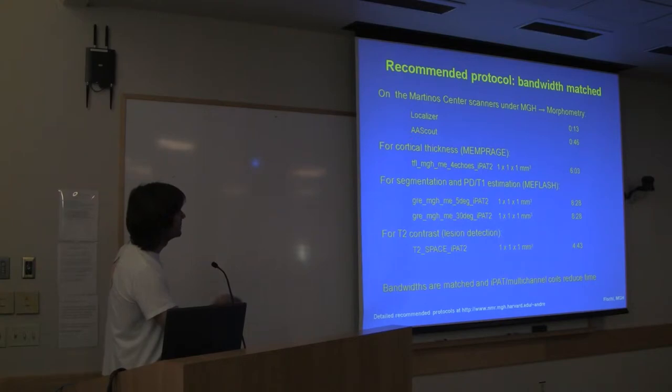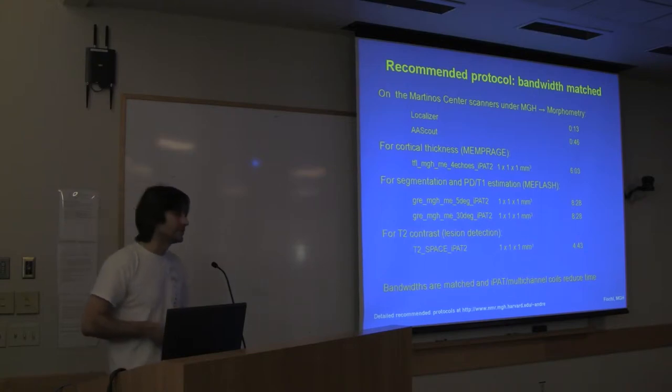So, yes, the recommended protocol, start with a localizer, a scout automatically positions the next scan so that they're all in the same position. Then, if all you want to do is cortical thickness study or you want to make a surface to show your fMRI results on, really all you need is to run one MPRAGE. It could take six minutes for one millimeter isotropic. But, if you have extra time, or if you want to do a better job on subcortical segmentation, we actually recommend doing two FLASH scans with two different flip angles, and I'll get to why in the next couple of slides. Then, you could also do T2 contrast with T2 SPACE. And the protocol that's on this website describes the parameters of all these sequences. And they're all bandwidth matched, and the purpose of bandwidth matching them is to make sure that the distortions are the same for all the scans.